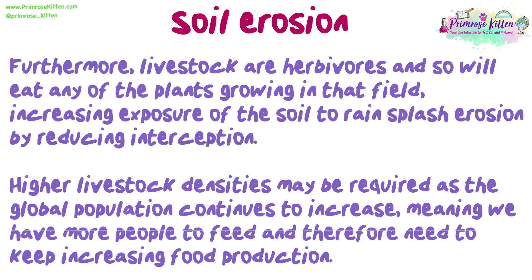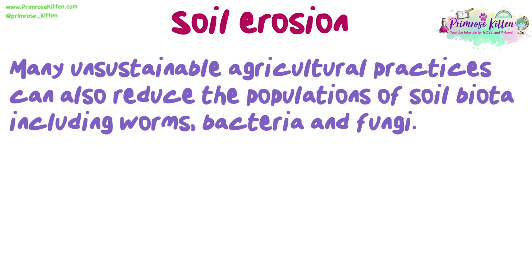Higher livestock densities may be required as the global population continues to increase, meaning we have more people to feed and therefore need to keep increasing food production. Many unsustainable agricultural practices can also reduce the populations of soil biota, including worms, bacteria, and fungi.